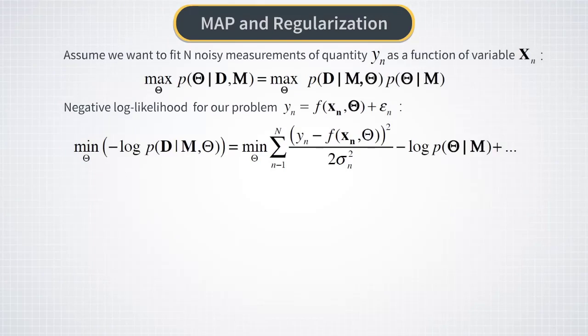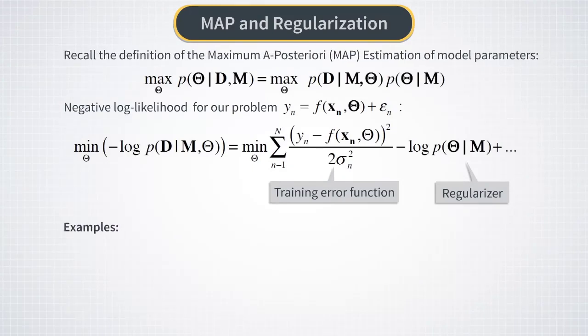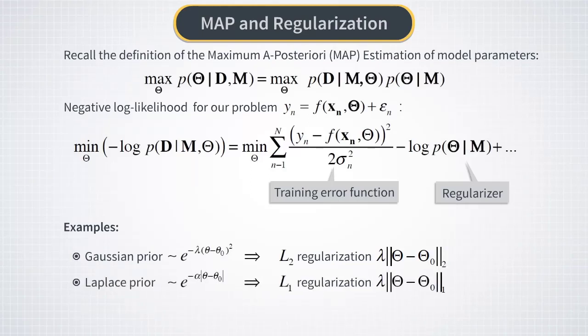Now, if we recall our discussion of regularization in the last week, we immediately realized that this additional term is actually equivalent to a regularizer in regression. Depending on the choice of the prior, this procedure leads to different regularizers. For example, if we take a Gaussian prior, we obtain the L2 regularization shown here. If we take the so-called Laplace prior shown here, we will obtain the L1 regularization.